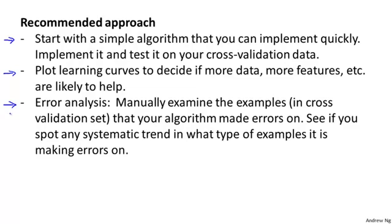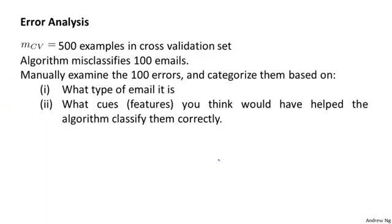Concretely, here's a specific example. Let's say you've built a spam classifier and you have 500 examples in your cross-validation set. In this example, the algorithm has a very high error rate and it misclassifies 100 of these cross-validation examples. What I do is manually examine these 100 errors and manually categorize them based on things like what type of email it is and what cues or features you think might have helped the algorithm classify them correctly.